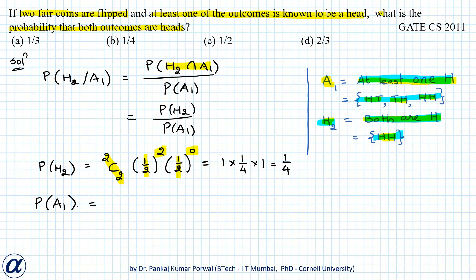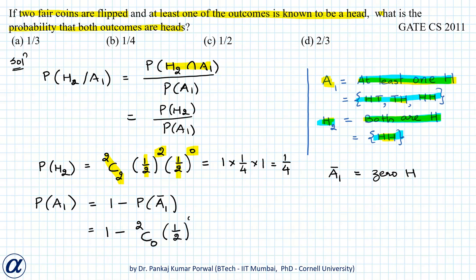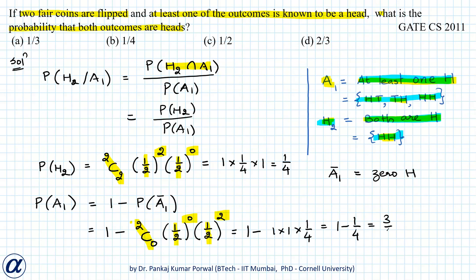P(A1) can be found using the complement: 1 minus P(A1 complement). A1 complement is the event of getting 0 heads, meaning 2 tails. Using the binomial formula: 1 minus 2C0 times (1/2)^0 times (1/2)^2, which equals 1 minus 1/4, giving 3/4. Therefore P(H2 | A1) = (1/4) divided by (3/4) = 1/3. So option A is correct.